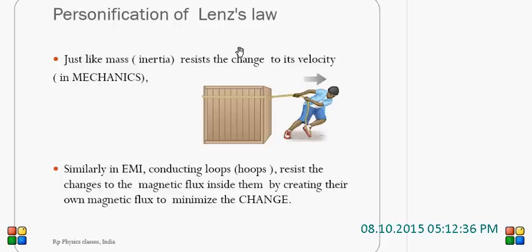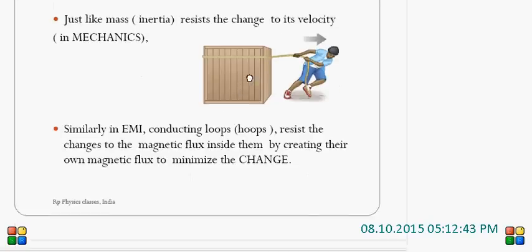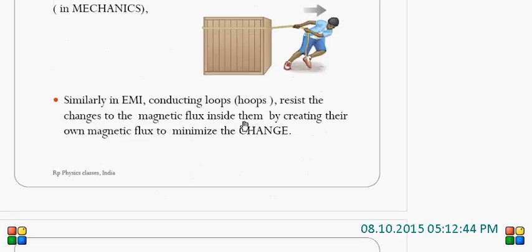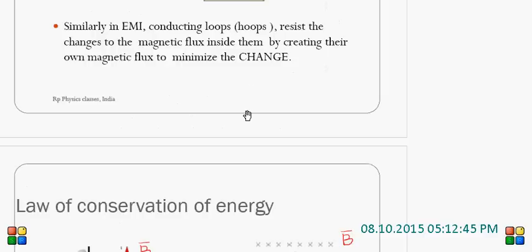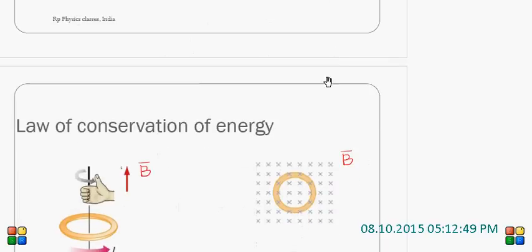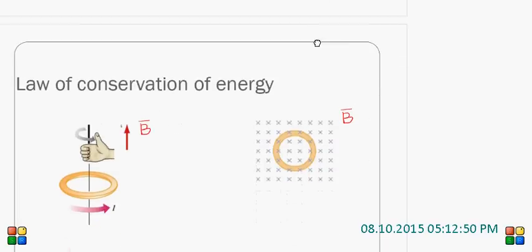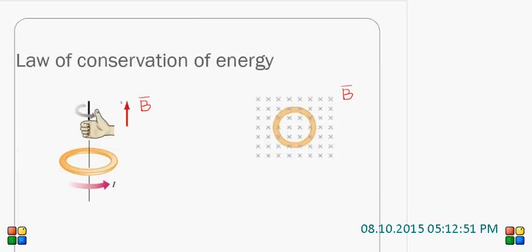That means, if you take conducting loops, they always oppose the change in flux. That is the actual essence of this. It is in accordance with the law of conservation of energy.